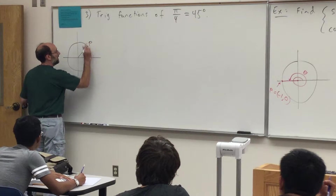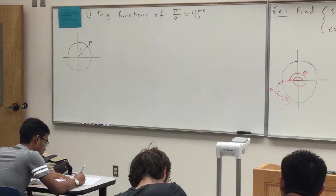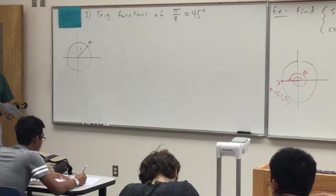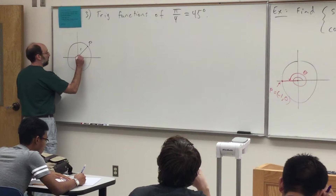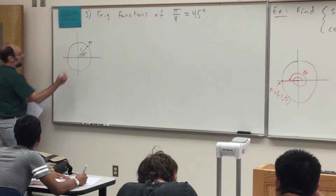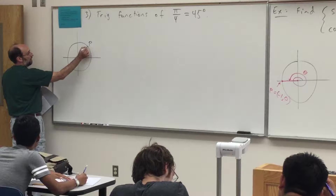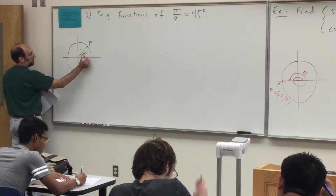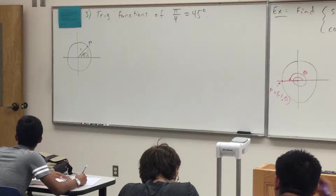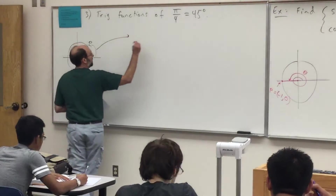I'm going to draw the unit circle with a central angle in standard position of 45 degrees. I'll get some point P — if we can find the coordinates of P, knowing the radius of the unit circle is 1, I'll be able to determine all six trig functions of 45 degrees. If I go from P and extend perpendicular down to the horizontal axis, I end up with a right triangle.